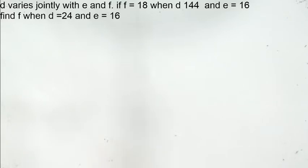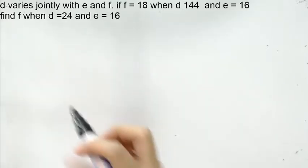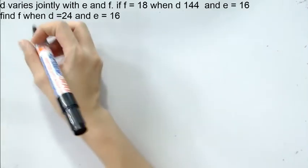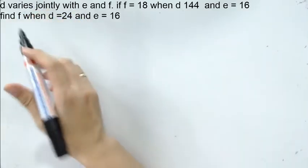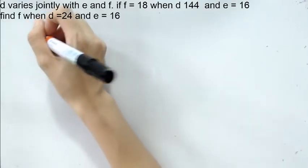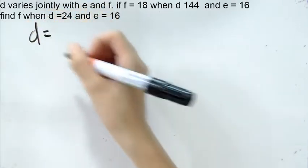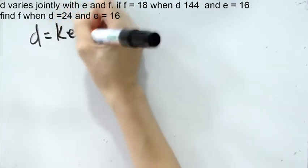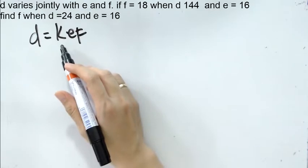First, we take a look at the given statement. We rewrite the given statement into equation. As I said earlier, whenever we are rewriting the equation, the first letter that comes first will be the first letter you need to write. D varies jointly with E and F. K always stands for the constant term.